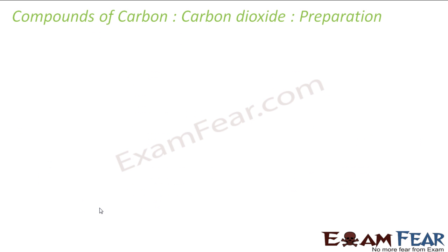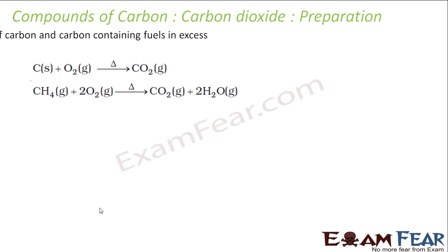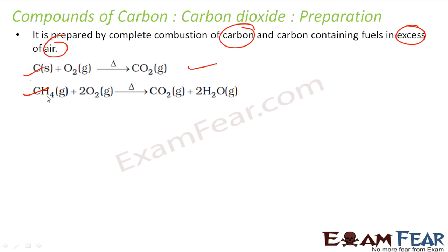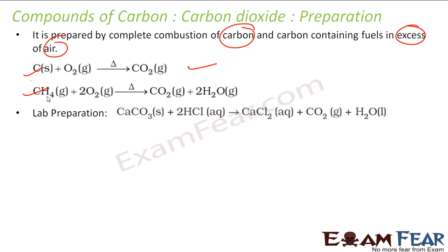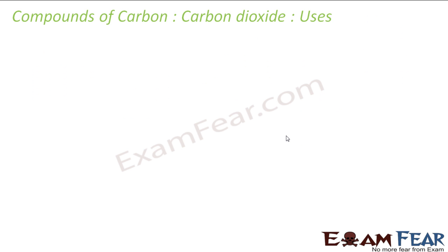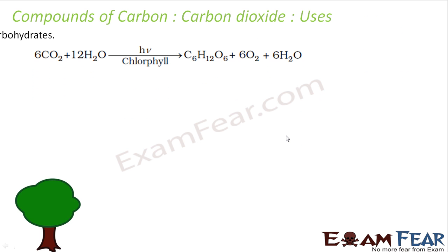Carbon dioxide can be prepared by burning carbon with excess oxygen, or by burning methane in excess oxygen. In the lab, calcium carbonate is reacted with hydrochloric acid to get pure carbon dioxide. On a commercial scale, it is prepared by heating limestone (calcium carbonate), which decomposes to give carbon dioxide.